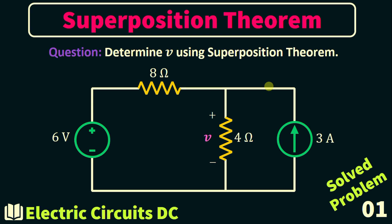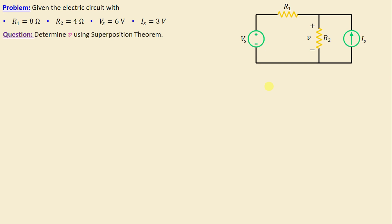Let's consider this network consisting of two resistors labeled R1 and R2, as well as two independent sources VS and IS. The question is to calculate the voltage V across the resistor R2 using the superposition theorem. Let's move on to the solution.